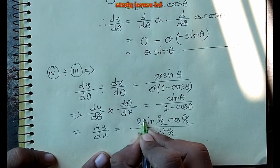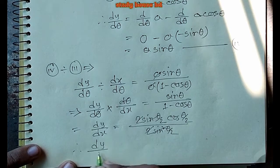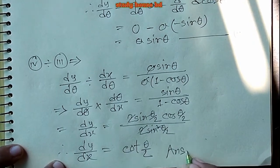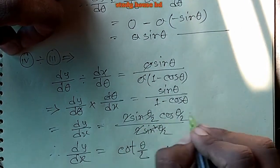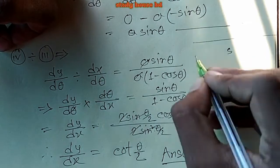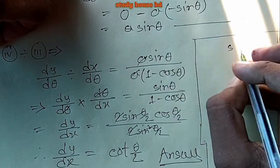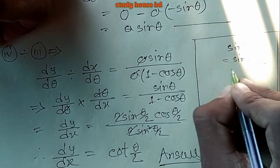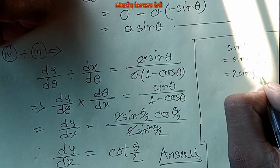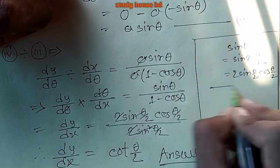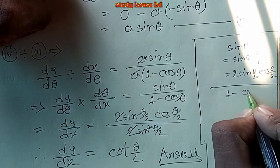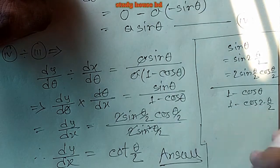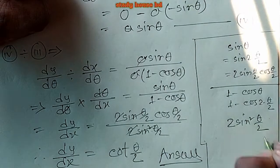So dy/dx equals 2 sin(θ/2) cos(θ/2) divided by 2 sin²(θ/2), which gives cos(θ/2) over sin(θ/2), that is cot(θ/2). Using 1 - cos 2θ equals 2 sin²θ and sin 2θ equals 2 sin θ cos θ, the final answer is dy/dx equals cot(θ/2).